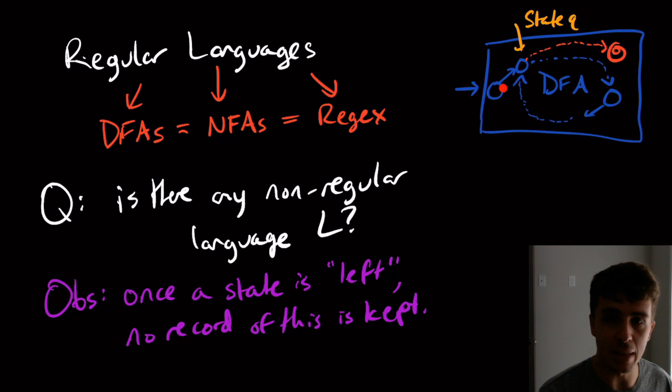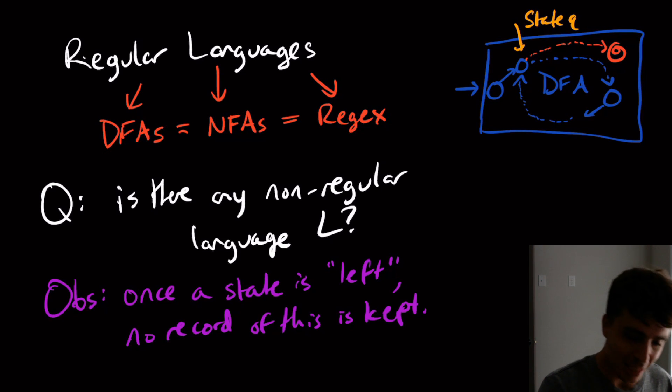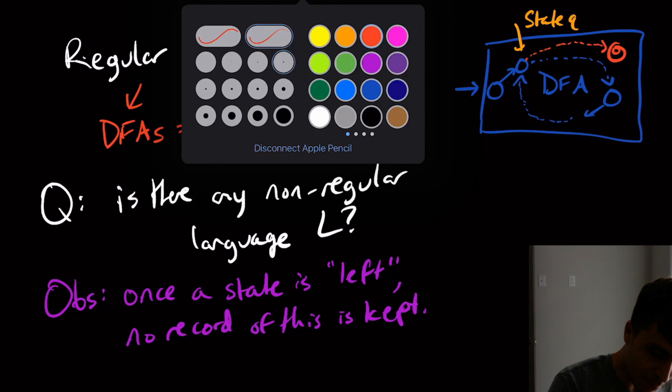But notice something even more important. What if I read a string that allows us to go around the loop twice, or three times, or four times, or more, then and then take the red transitions. Every single one of those is accepted too.